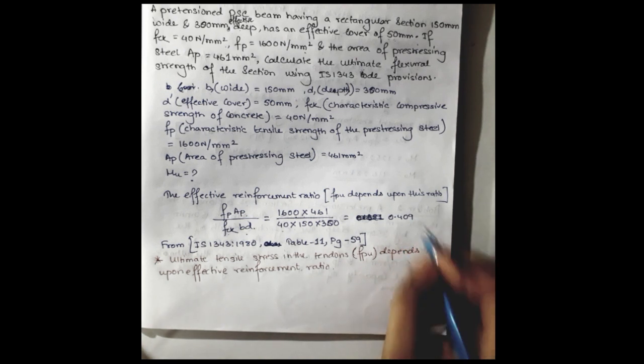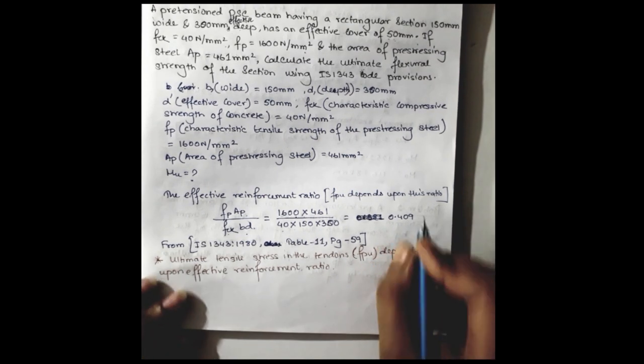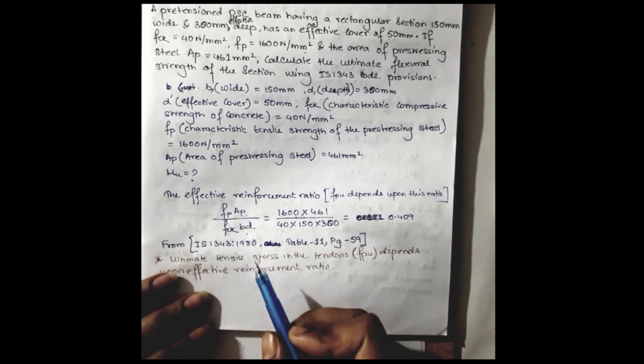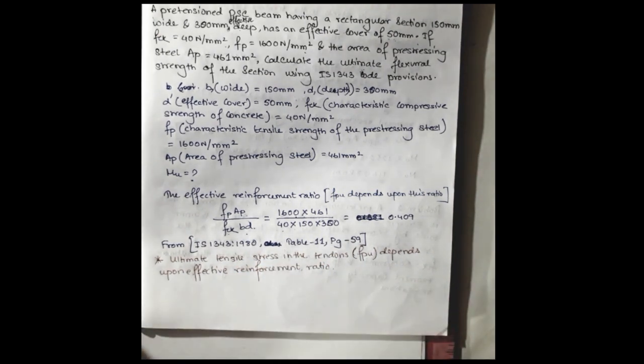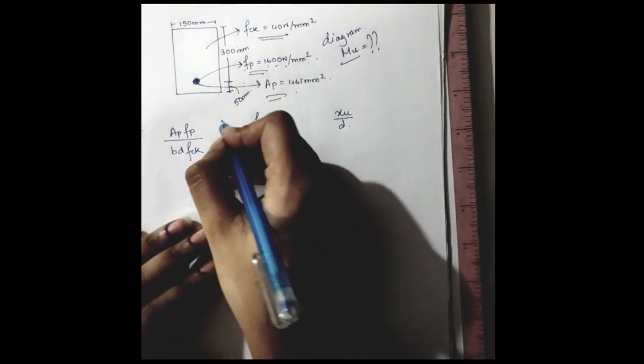So after getting this value, we will go to the IS code 1343-1980, Table 11, page 59, where you will see.